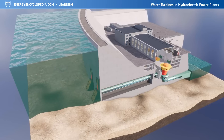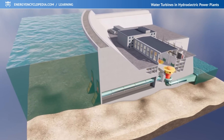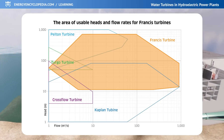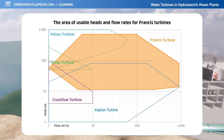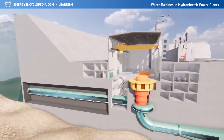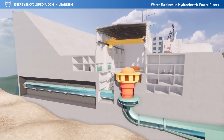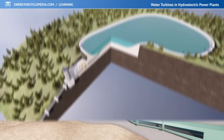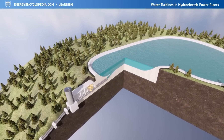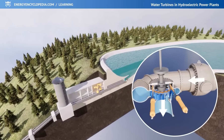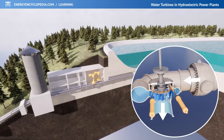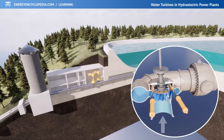The Francis turbine is one of the most commonly used turbines, not only in standard hydropower plants, but thanks to its reversible design, often also in pump storage hydroelectricity applications. This is because it works equally well as a turbine and a powerful pump.